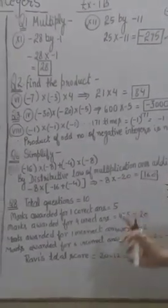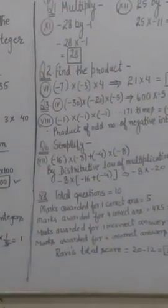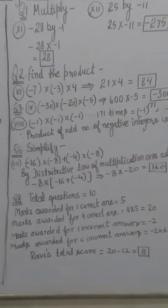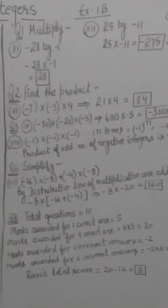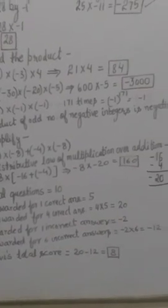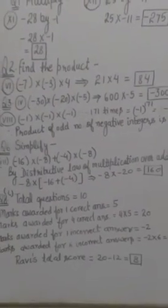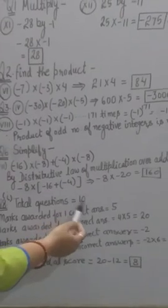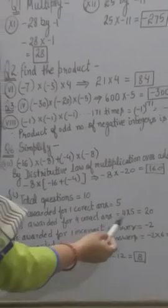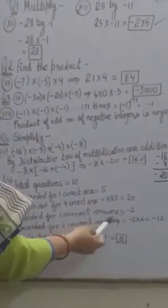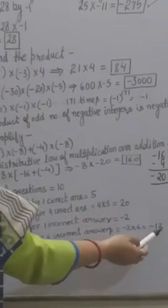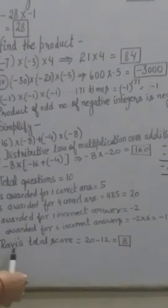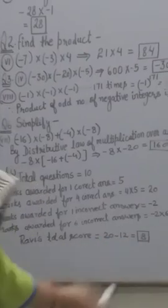Question 8 is a word problem. In a class test containing 10 questions, 5 marks are awarded for every correct answer, −2 marks for every incorrect answer, and 0 for each question not attempted. For part 1: marks for 4 correct answers = 4 × 5 = 20. Marks for 6 incorrect answers = −2 × 6 = −12. Ravi's total score = 20 + (−12) = 8.